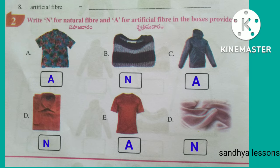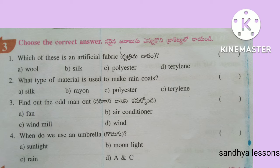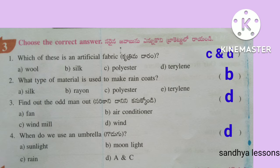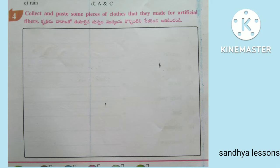Second, write N for natural fiber and A for artificial fiber in the boxes provided. Third, choose the correct answer. Which of these is an artificial fabric? Both C and D — Polyester and Terylene. What type of material is used to make raincoats? Rayon. Find out the odd man out: Wind. When do we use an umbrella? Both A and C — sunlight and rain. Fourth, collect and paste some pieces of clothes made from artificial fibers.